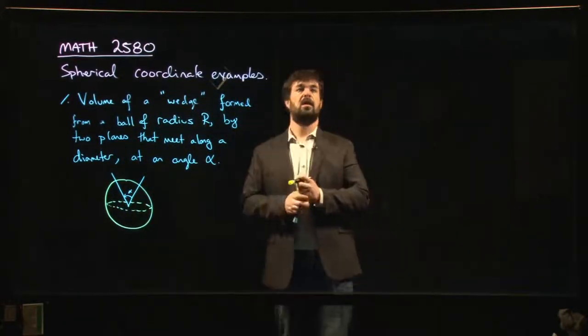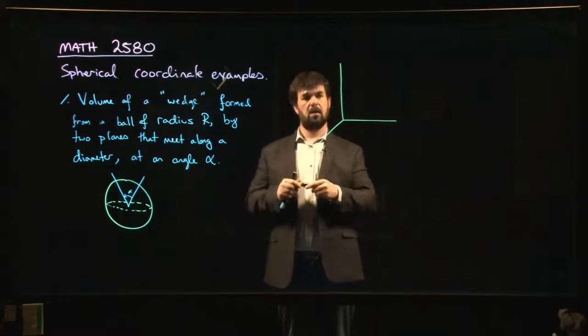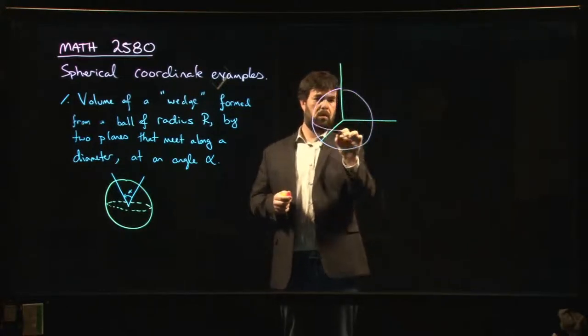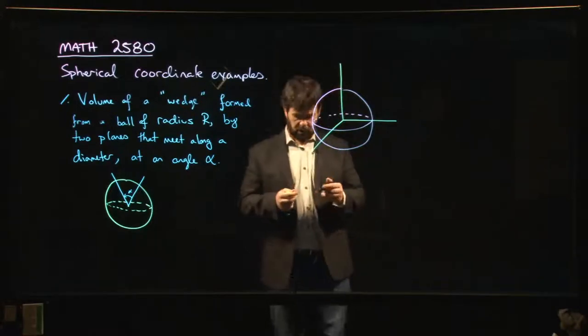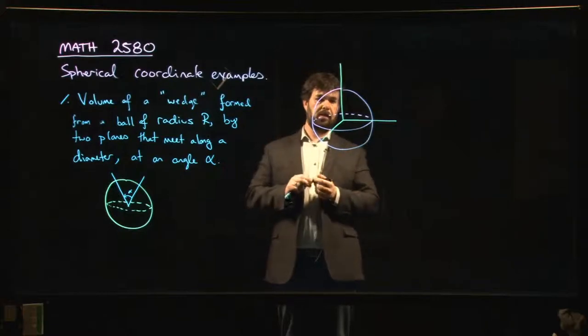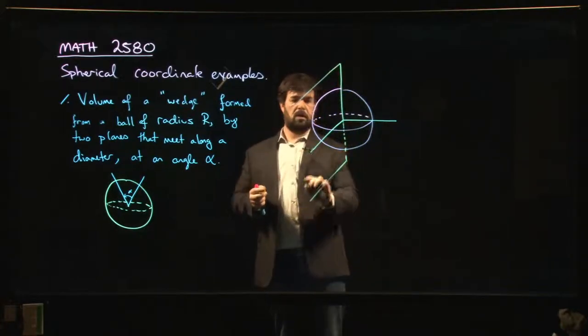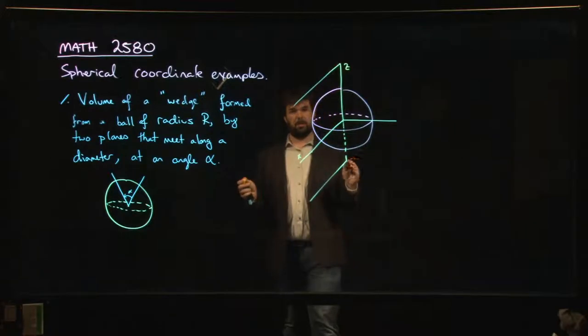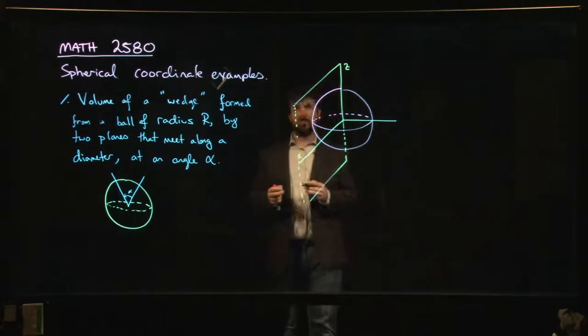what we really should be doing is we should be setting up our coordinate system like so. So we should put in our coordinate axes. We'll center our sphere at the origin as one does. There's our sphere. And what we'll do is we'll take one of these two planes that's going to come in and slice our sphere. One of those two planes will take to be the xy plane, or sorry, the xz plane. Or at least it's going to be the portion of the xz plane where x is bigger than or equal to zero. So that's going to be plane number one.